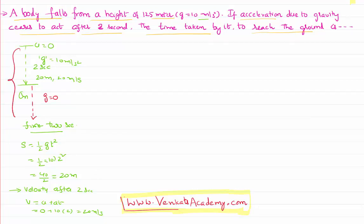It is given that the total height is 125 meters, out of which 20 meters is already covered. So the remaining distance that it has to cover, the remaining displacement to be covered is, out of total 125, 20 is covered, so remaining is 105 meters.